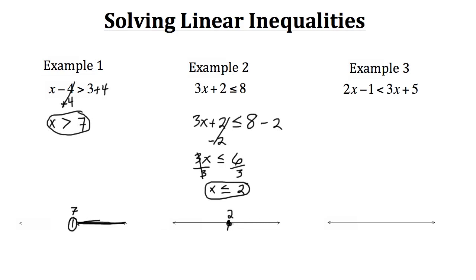X can also be less than 2, so we shade all numbers heading in the negative direction. That's what the graph looks like on a number line for example 2.